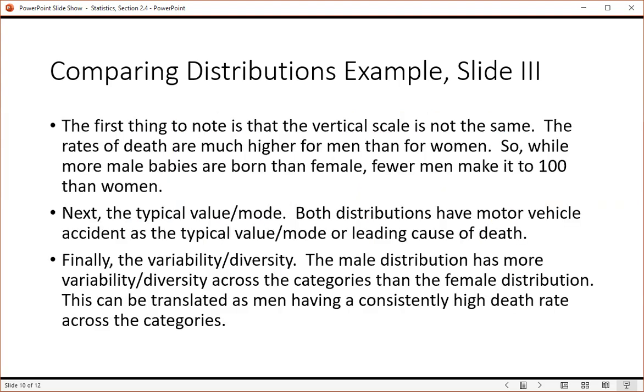I guess I get typed up most of that on this page. So the first thing to notice is the vertical scale is not the same. The rates of death are much higher for men than for women. So while more male babies are born than female, fewer men make it to 100 than women because the rate of death is higher.